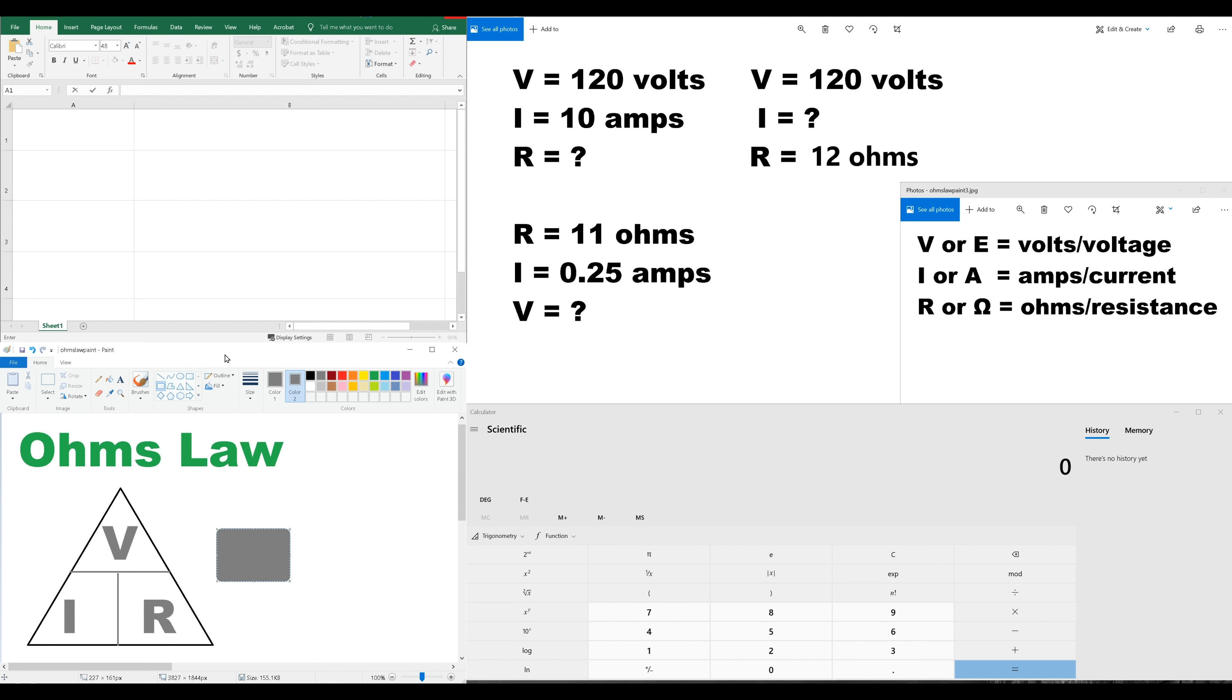So I have written down here a quick triangle. It's the Ohm's Law triangle. V is always on the top. I and R are always on the bottom. Before I talk about this, let's go over and talk about what these letters mean. So here, on the right side of my screen, I have V or E, I or A, and R or the omega sign.